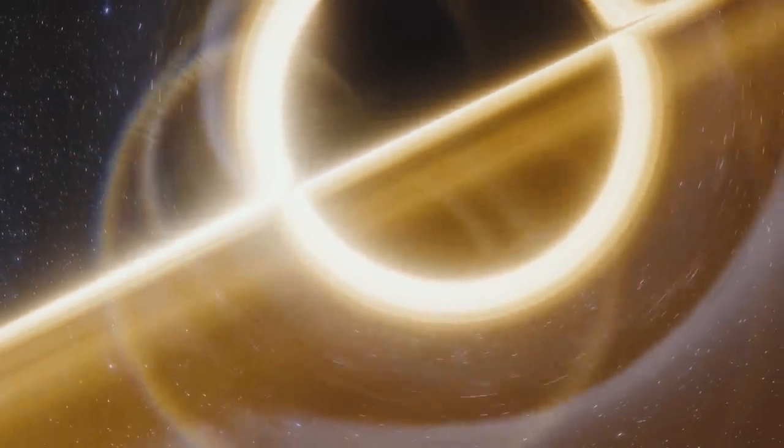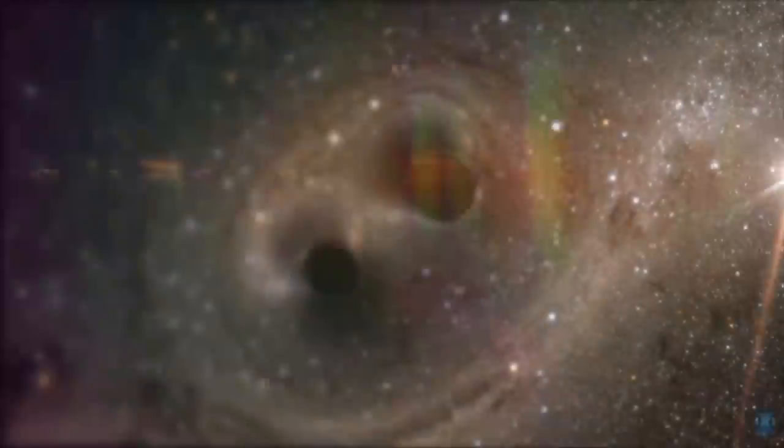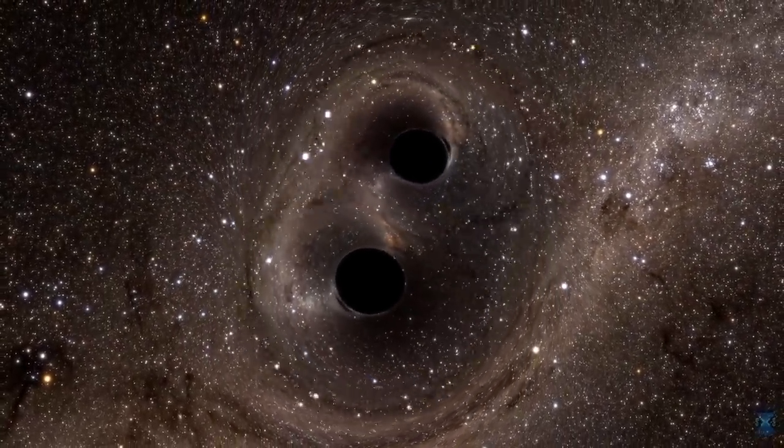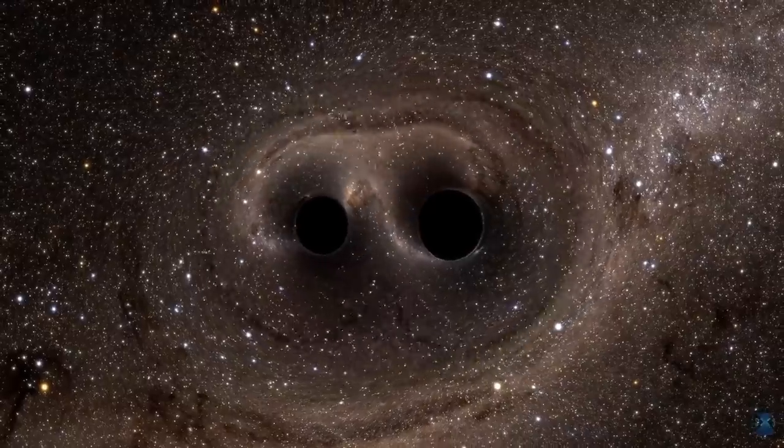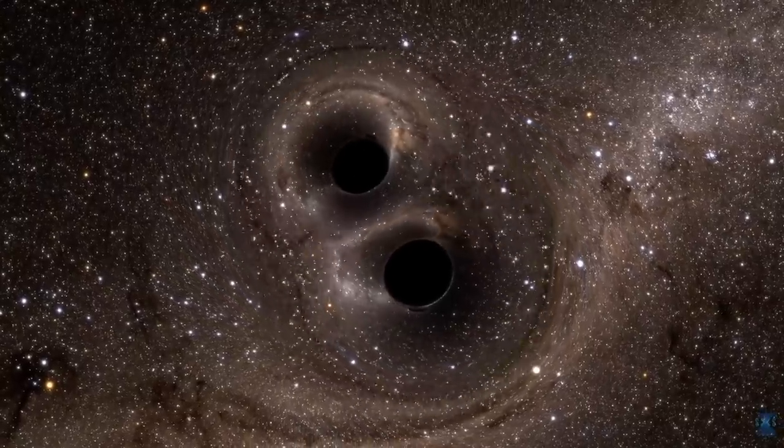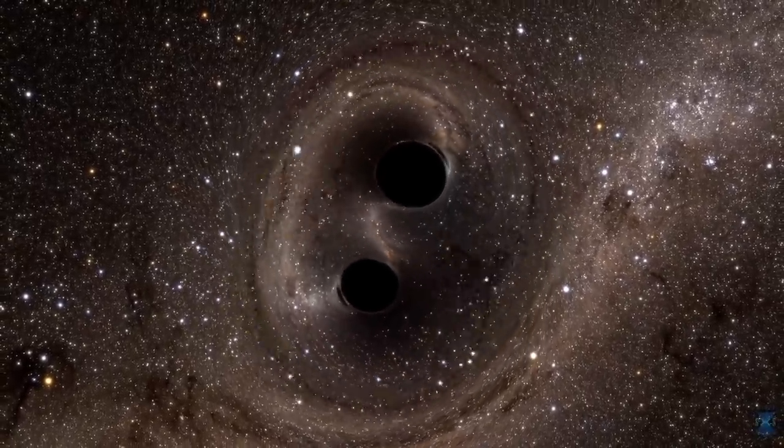Einstein didn't know that there were such things as black holes when he published the theory. He certainly didn't know that we'd ever see them collide together. He certainly didn't know that there were ripples in the fabric of the cosmos, although he predicted that slightly later.